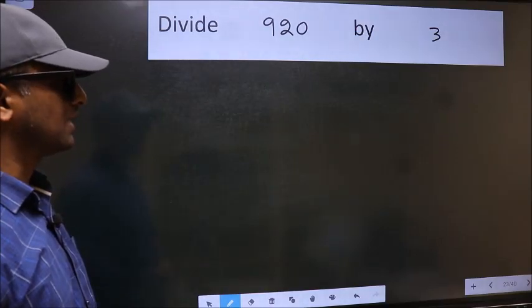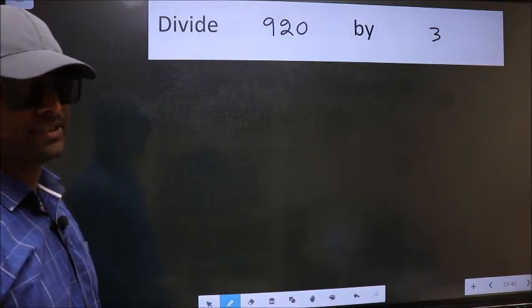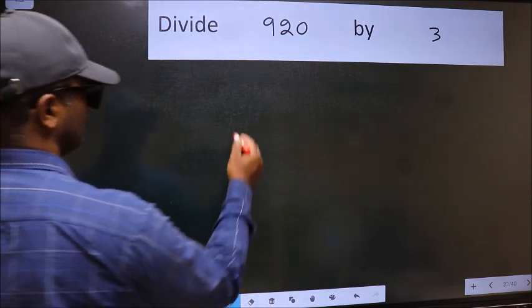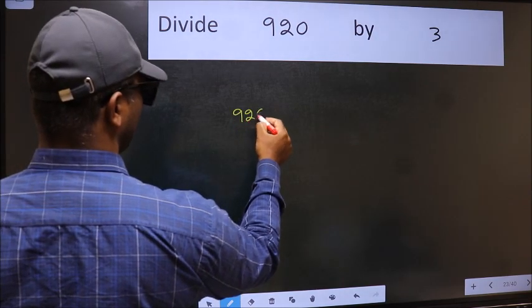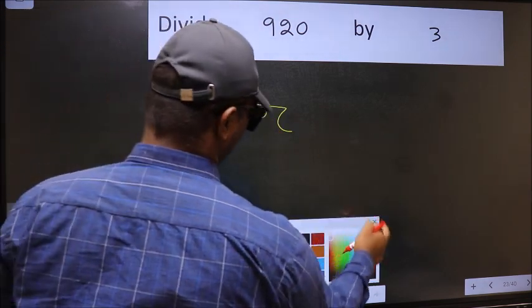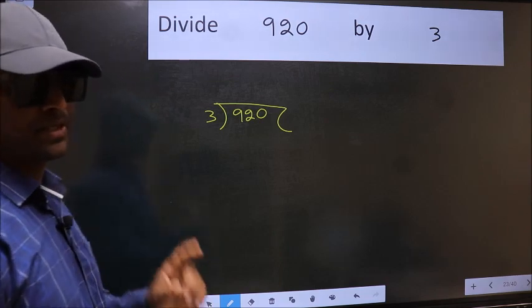Divide 920 by 3. To do this division, we should frame it in this way. 920 and 3 here. This is your step 1.